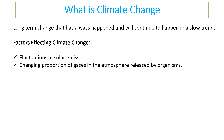Long-term change, then, is climate change. It has always happened and will continue to happen with a slow trend of change — climate change isn't a new thing. Factors that can affect climate change include: one, the fluctuation of solar emissions, which is the main argument of those who don't believe in anthropocentric climate change; and two, the change in proportion of gases in the atmosphere released by organisms, which humans obviously can impact.